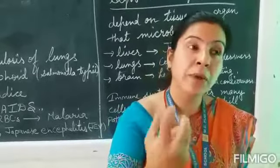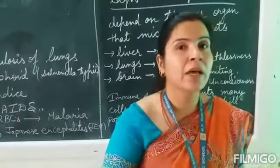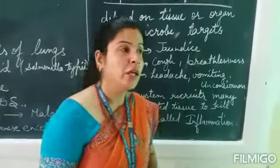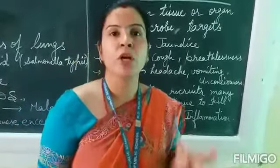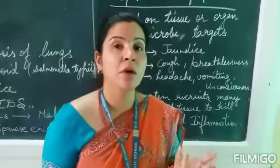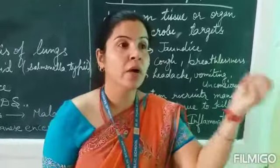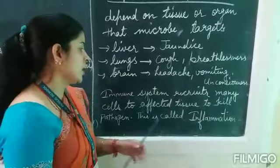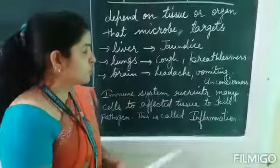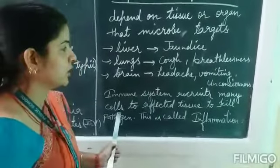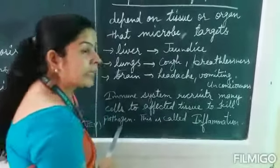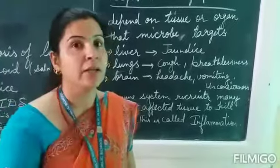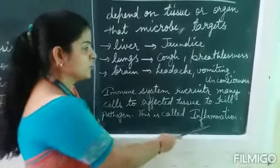Now, when microorganisms enter the body and try to cause disease, there is inflammation. What is inflammation? Our body has an immune system — an immunity, a power — which means that if a foreign particle or pathogen enters, the body fights against it. The affected tissues recruit cells to kill the pathogen — the disease-causing microorganisms that have entered the body. We call this process inflammation.